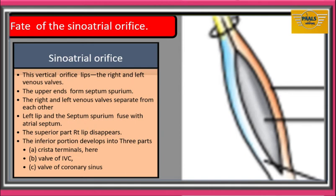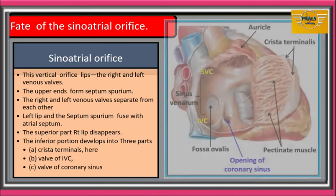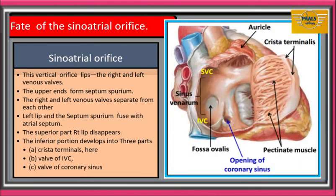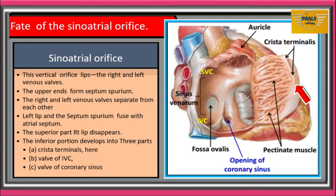The superior portion of the right venous valve will disappear entirely. The inferior portion will develop into three structures: 1. Crista terminalis. 2. Valve of the inferior vena cava. 3. The valve of the coronary sinus. In the image of a fully developed heart, the crista terminalis forms the dividing line between the original trabeculated part of the right atrium and the smooth-walled part called the sinus venarum.